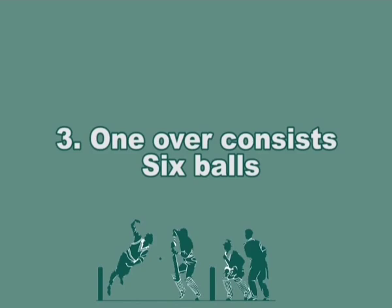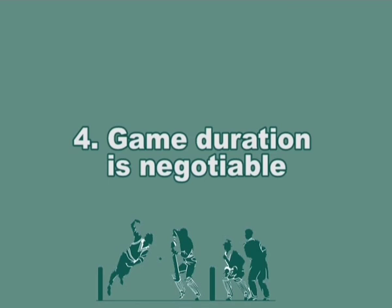Three: One over consists of six balls. The bowler bowls the cricket ball to the striker. After the bowler delivers six balls, he has completed an over. Another team member now takes a turn to bowl the next over. Four: Game duration is negotiable. Teams may agree to play two innings and limit the number of hours on the field. Alternatively, the teams may opt to play only one inning, but in that case the number of overs are decided in advance.